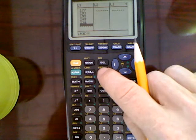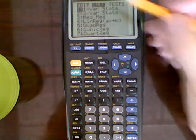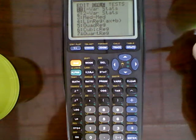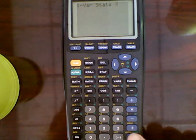Then I'll press the STAT key again. I'll arrow to the right to CALC. And then the first option here is one-variable statistics, so I'll press 1. Press enter.